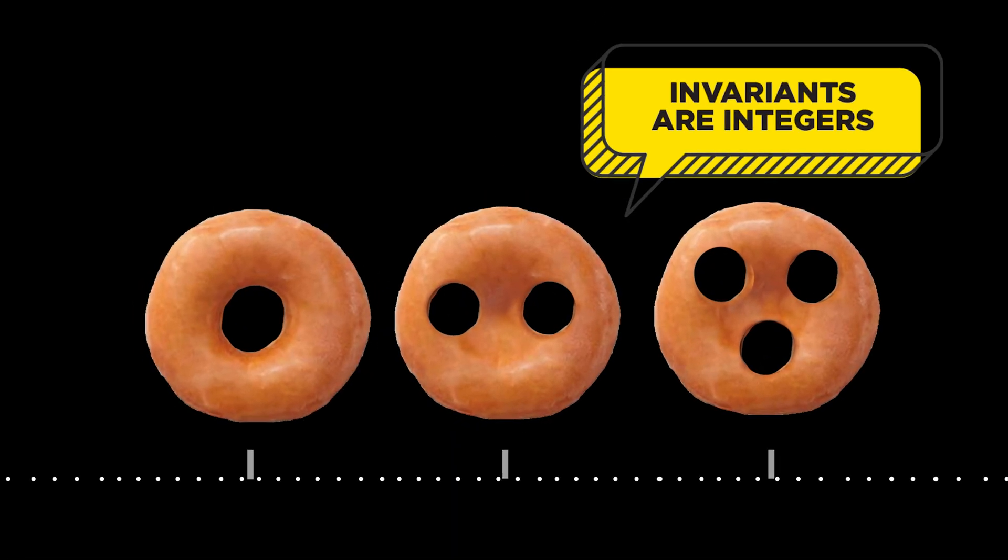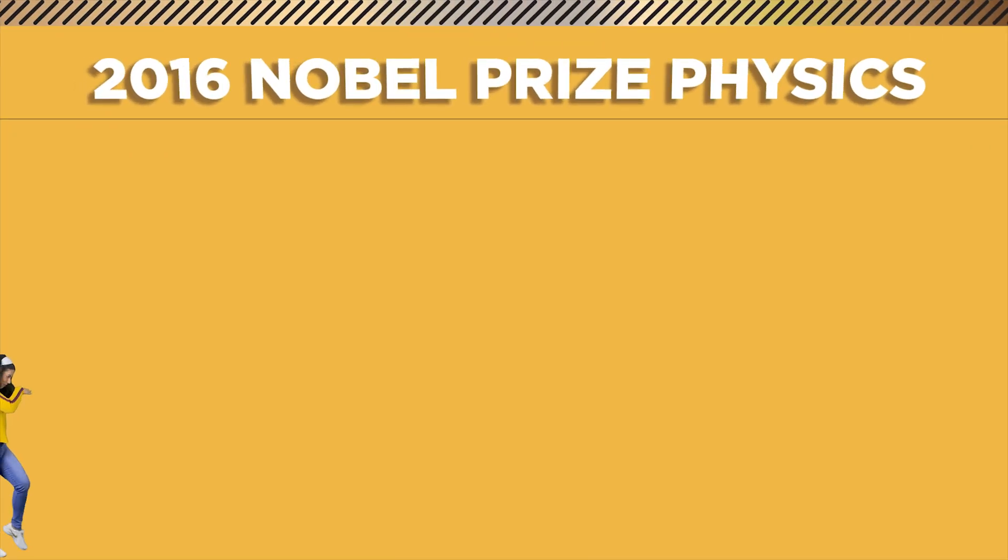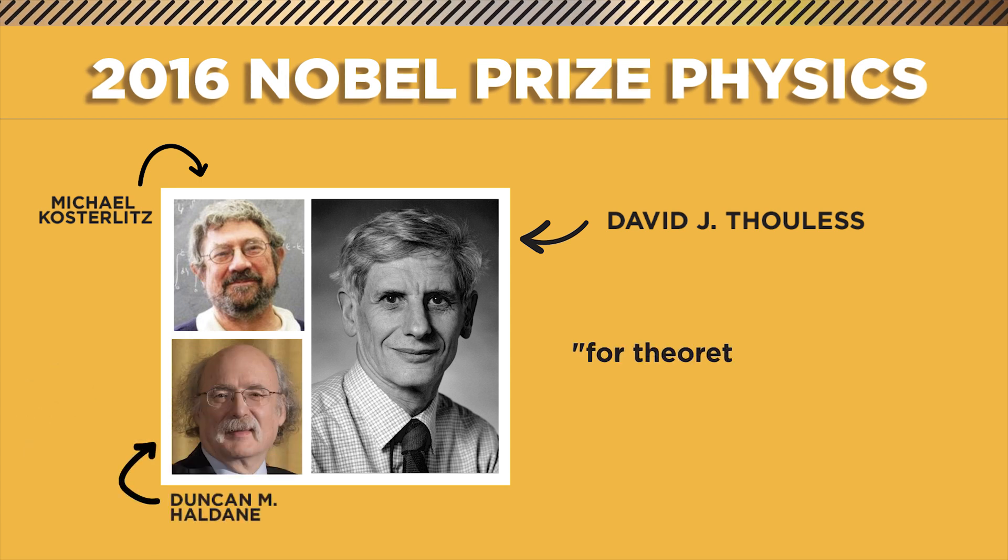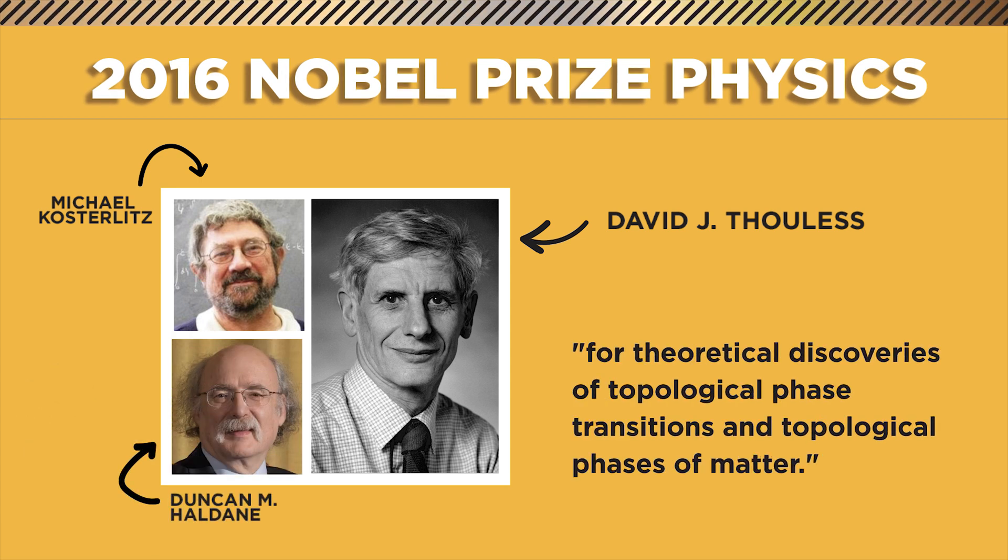...yet the hole is protected. This hole is an example of a topological invariant, which by definition can only be integers. Topology is a key tool used to make some of the most profound Nobel Prize-winning discoveries on the bizarre behavior of quantum matter.